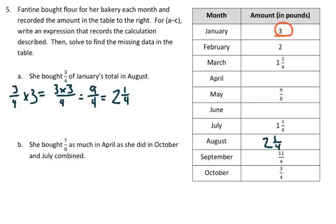She bought 7/8 as much in April as she did in October and July combined. So let's take a look. October, she has 3/4. In July, she has 1 and 1/4. So adding 1 and 1/4 plus 3/4 equals 2.